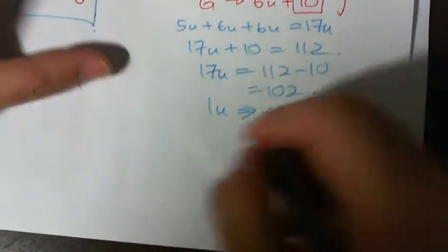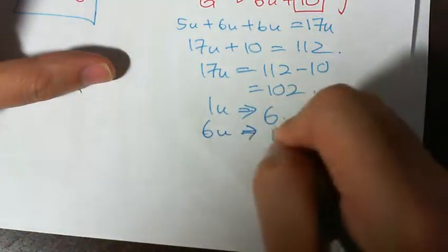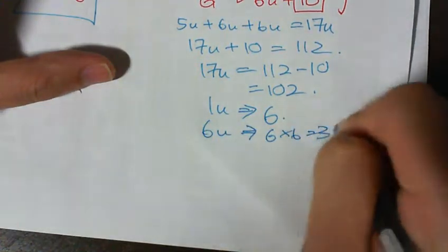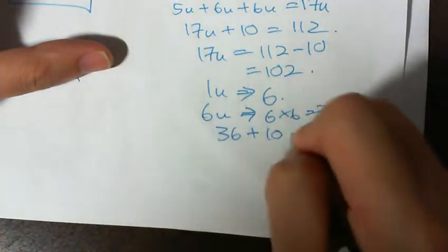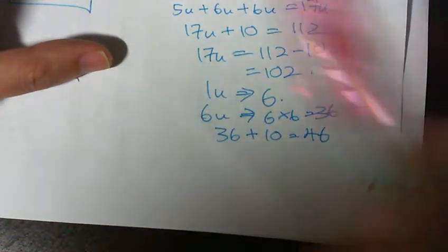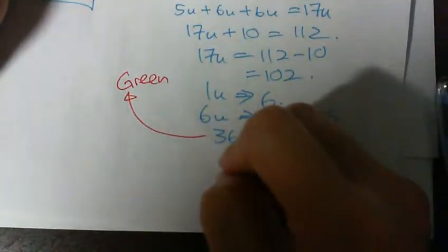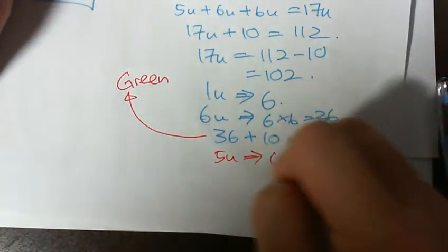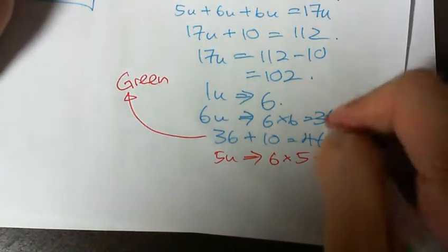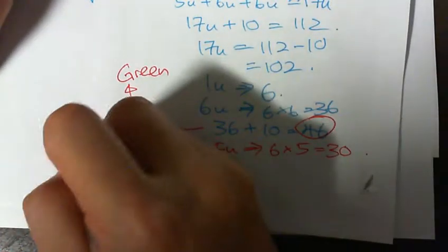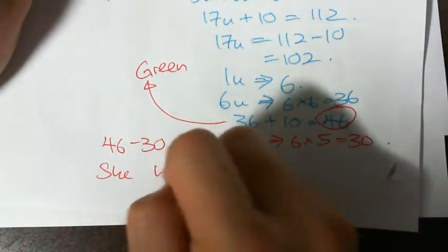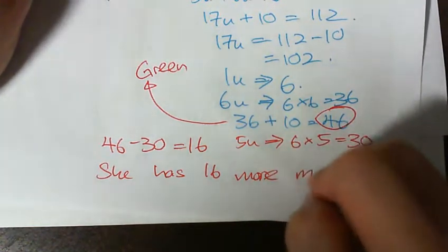They asked how many more green marbles than blue marbles. Green is 6 units: 6 times 6 equals 36, plus 10 equals 46. Blue is 5 units: 5 times 6 equals 30. So 46 minus 30 equals 16. She has 16 more green marbles than blue marbles.